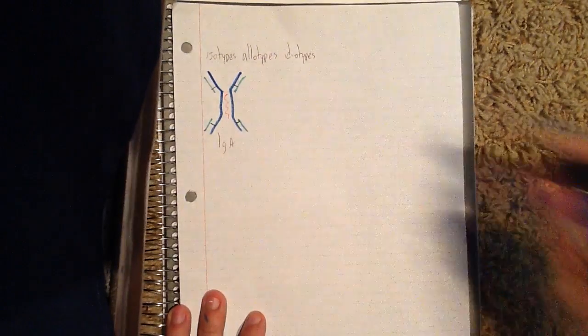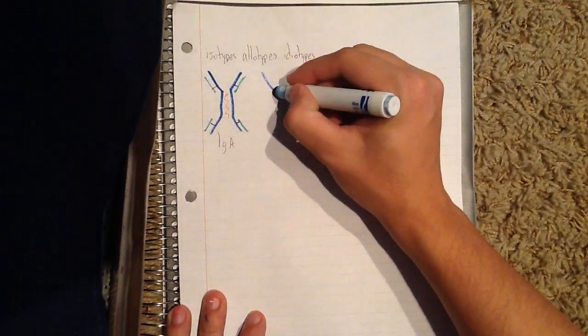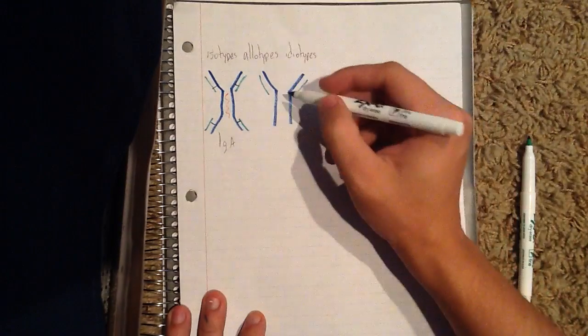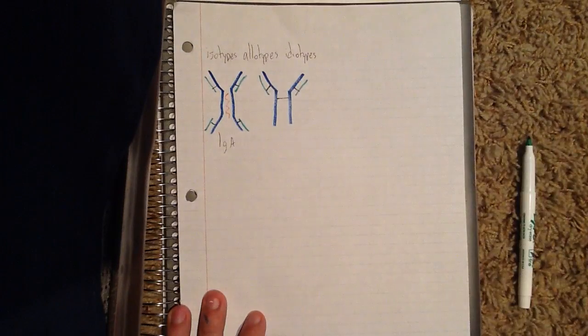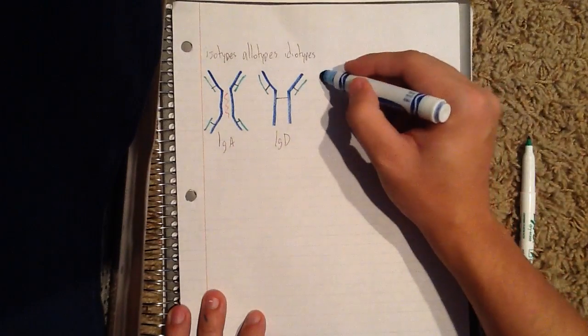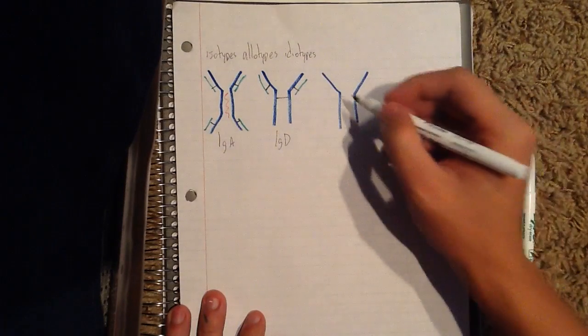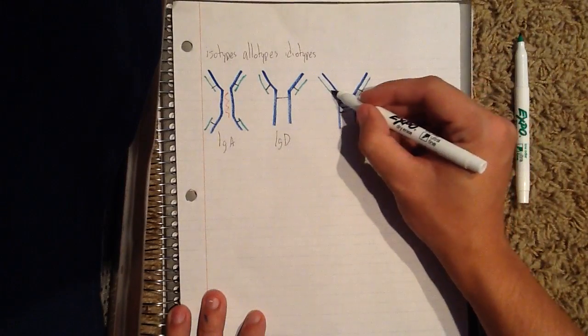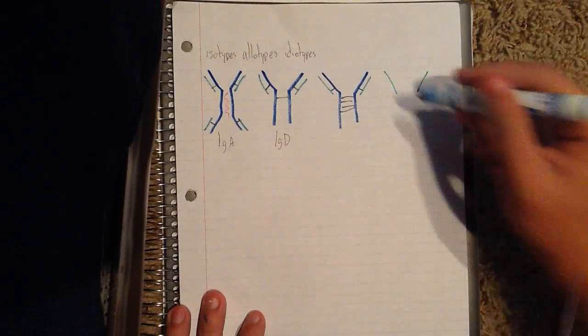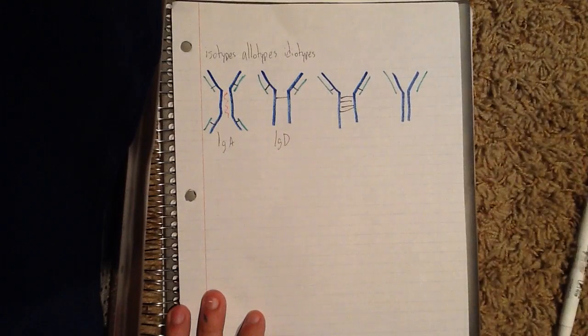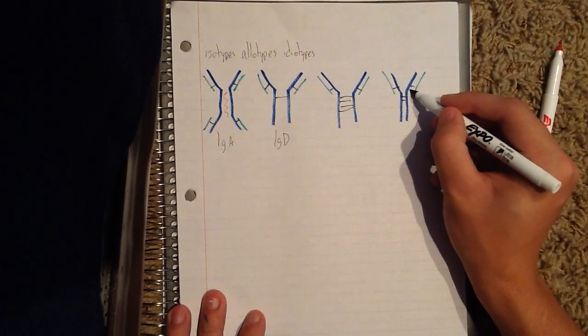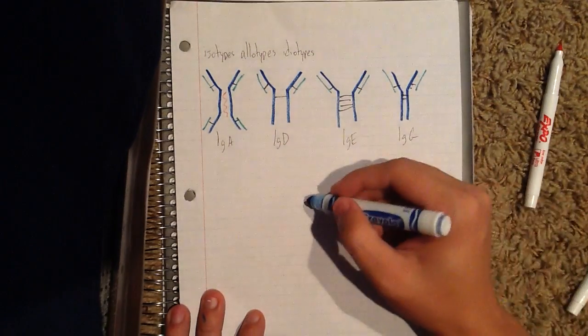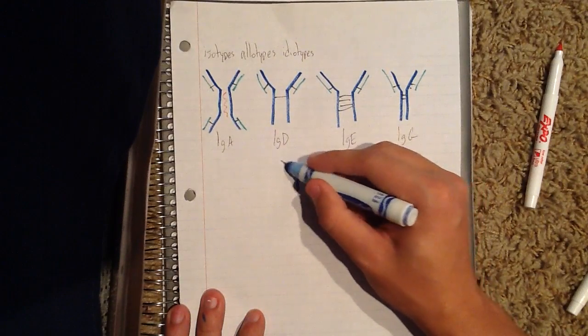This is the IgA molecule, and the second being an IgD molecule. The third is the IgE molecule. The fourth is IgG, and the final molecule is the IgM molecule.